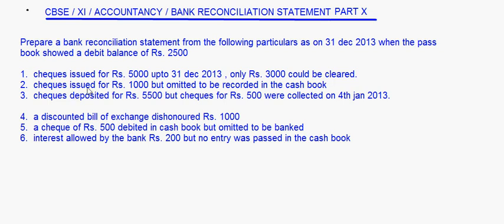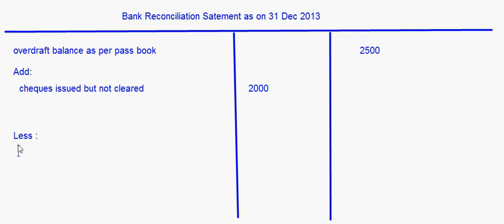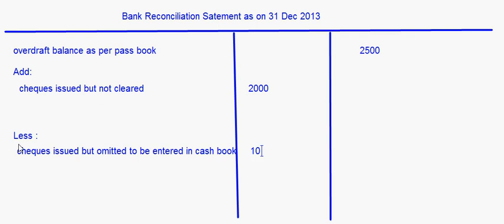Next: checks issued for Rs. 1000 but omitted to be recorded in the cashbook. The bank may have cleared it, so the passbook overdraft balance goes up by Rs. 1000, but in the cashbook it has not been recorded, so the cashbook overdraft balance is less. This will come under Less items: Checks issued but omitted to be entered in cashbook — Rs. 1000.